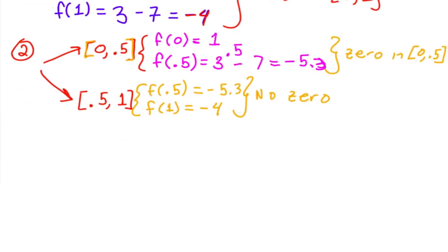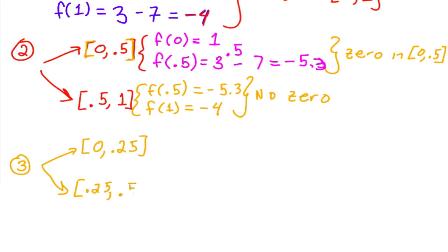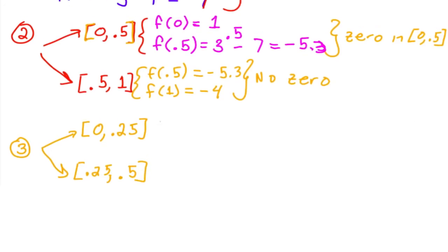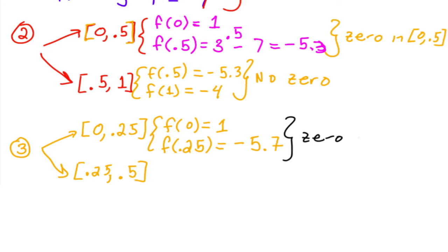Since we know there's a zero in the interval from 0 to 0.5, the next iteration breaks that into [0, 0.25] and [0.25, 0.5]. Notice that each time you're getting more and more accurate. For [0, 0.25]: f(0) is 1 and f(0.25) is approximately negative 5.7. So there's a zero in the interval from 0 to 0.25. You can do this as many times as you want and get more and more accurate each time.